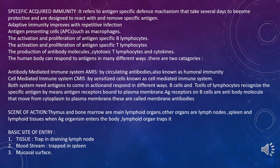Antigen receptors on B cells are antibody molecules that move from cytoplasm to plasma membrane — these are called membrane antibodies. Thymus and bone marrow are the main lymphoid organs: thymus is important in childhood; bone marrow in adults. Other organs are lymph nodes, spleen, and lymphoid tissues. Antigen organisms can enter the body through tissue, blood stream, or mucosal surfaces and are trapped in draining lymph nodes.